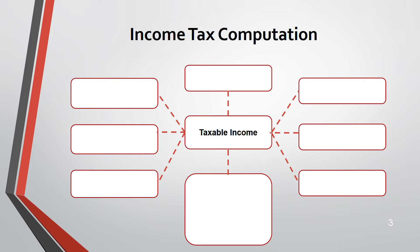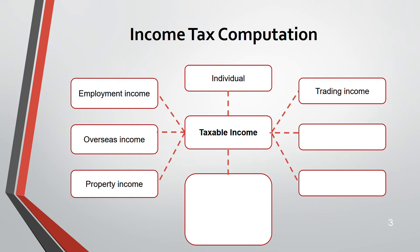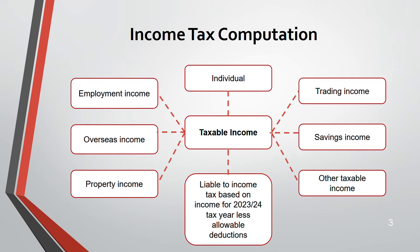There are several types of taxable income on which you must pay income tax: property income, overseas income, employment income, trading income, savings income, and other taxable income. Whatever type of income you have — savings, trading, or employment — it will be liable to the 2023-24 tax year, less any allowable deductions.